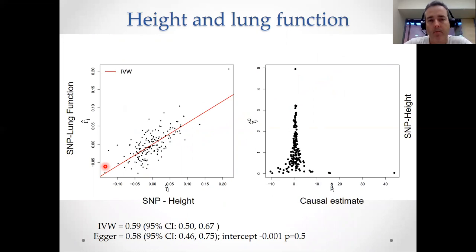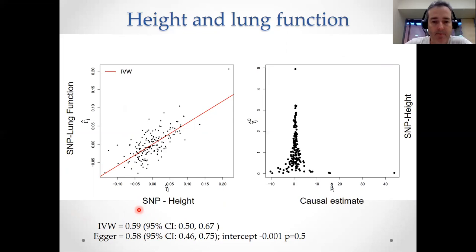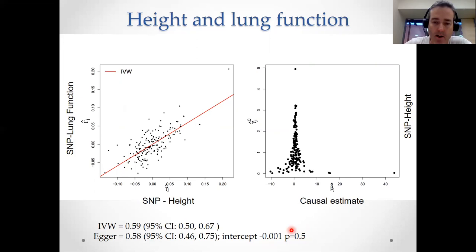Let's look at some empirical examples. Here's one example of height and lung function — two traits where there most definitely is a causal relationship. Height causes lung function; taller people have bigger lungs, so height is causal for measures of lung function. When we perform inverse variance weighted meta-analysis and Egger regression, we get very similar estimates of the causal effect, both significantly different from zero. Interestingly, the y-intercept of the Egger regression is almost at zero, and a test for constraining that to zero yields a non-significant result.